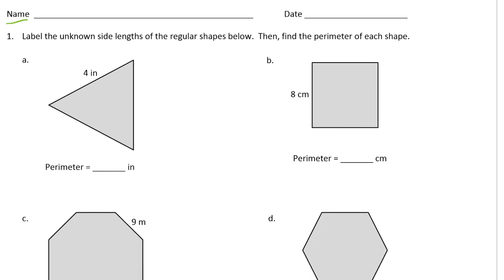And it says label the unknown side lengths of the regular shapes below and then find the perimeter of each shape.